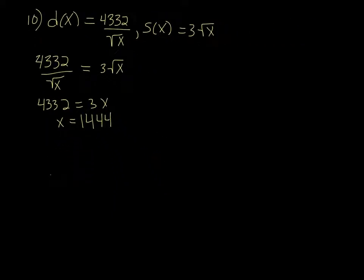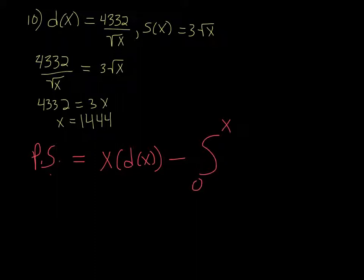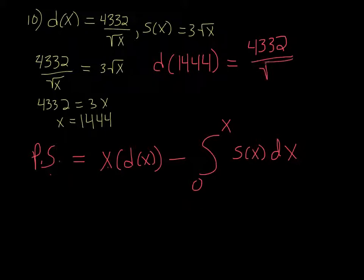Then, it wants the producer surplus. So producer surplus is equal to your x times either D(x) or S(x). It doesn't matter because they're both going to be the same. Minus the integral from 0 to x of the supply function, so S(x) dx. Well, I have x, but I don't have D(x), so D(1444) is equal to 4,332 over the square root of 1444. And when we do that, we get 114.